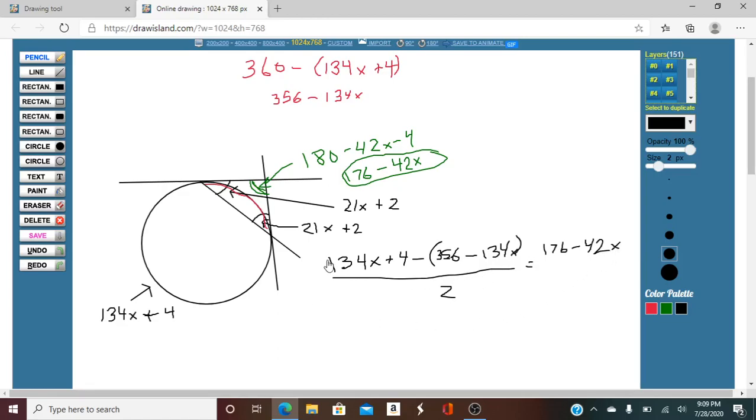Okay, so combine the 134 minus, or subtracting a negative, it's going to be 268X. 4 minus 356 is minus 352.